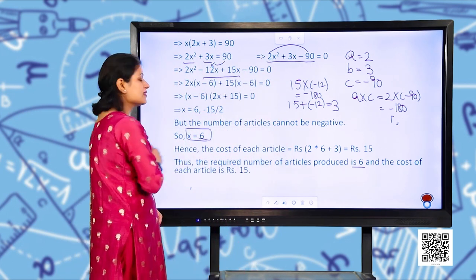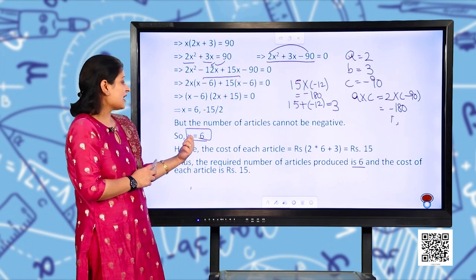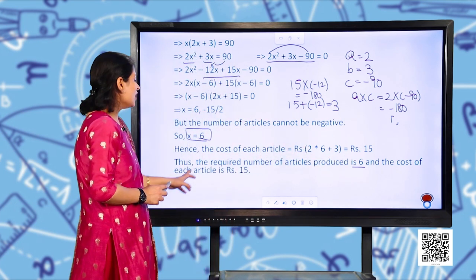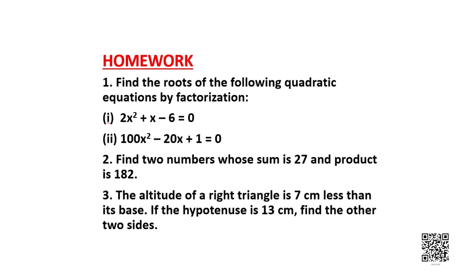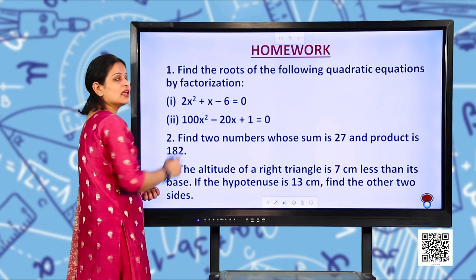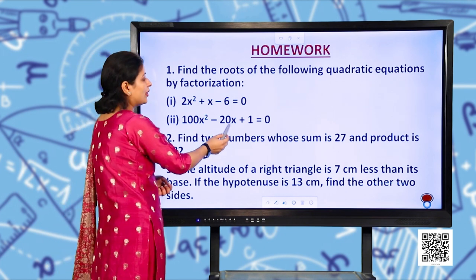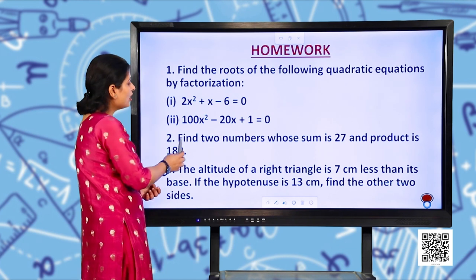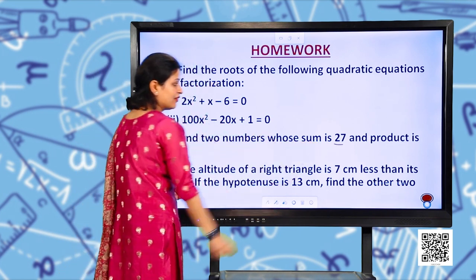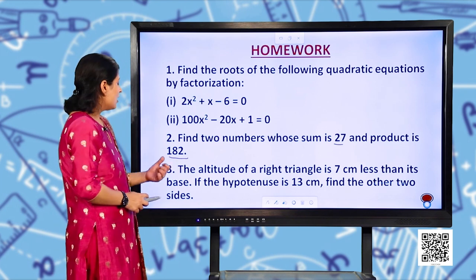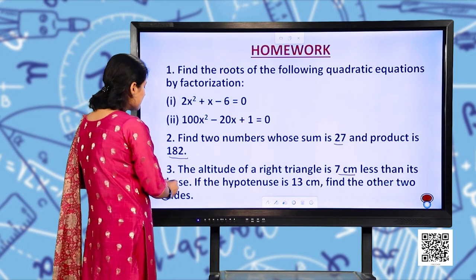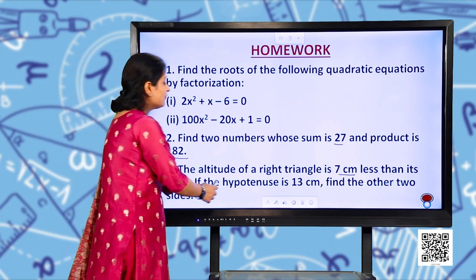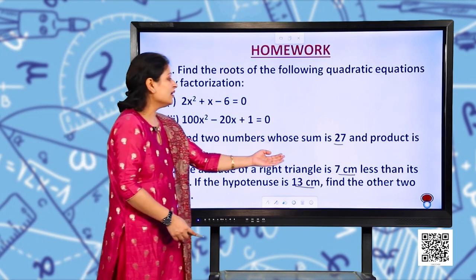Now there are a few homework questions. Question 1: find the roots of the following quadratic equations by factorization — (a) 2x² + x − 6 = 0, (b) 100x² − 20x + 1 = 0. Question 2: find two numbers whose sum is 27 and product is 182. Question 3: the altitude of a right triangle is 7 cm less than its base; if the hypotenuse is 13 cm, find the other two sides.